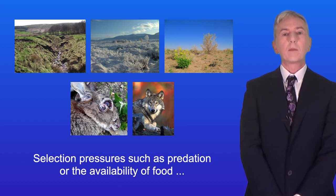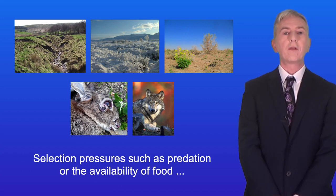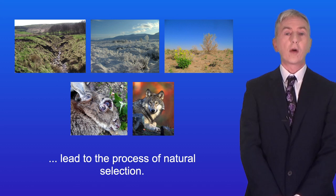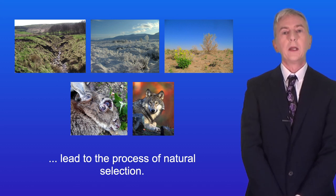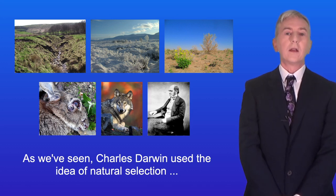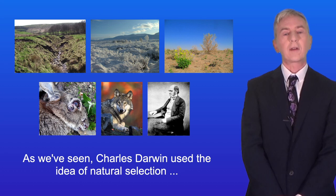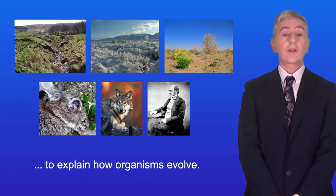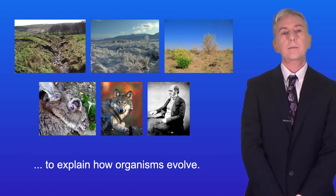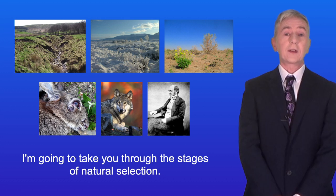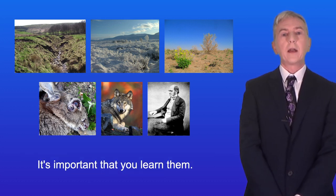Selection pressures, such as predation or the availability of food, lead to the process of natural selection. Charles Darwin used the idea of natural selection to explain how organisms evolve. I'm going to take you through the stages of natural selection, and it's important that you learn them.